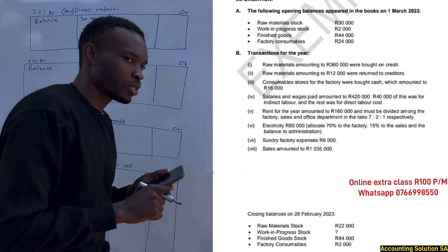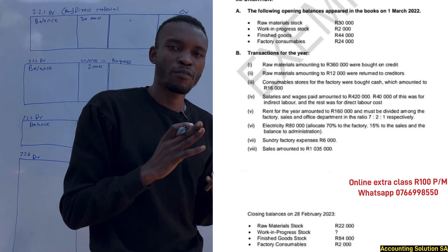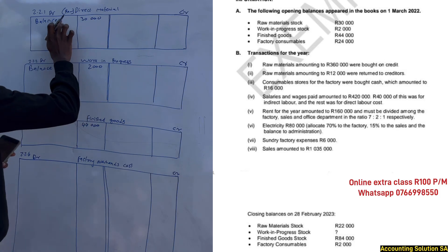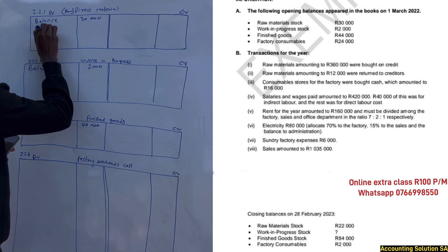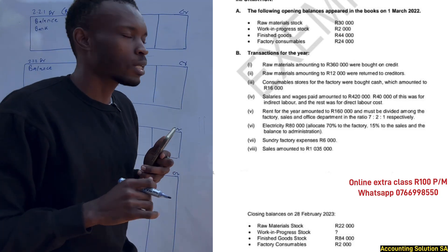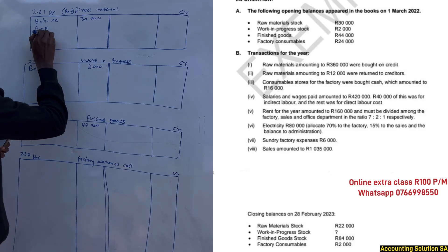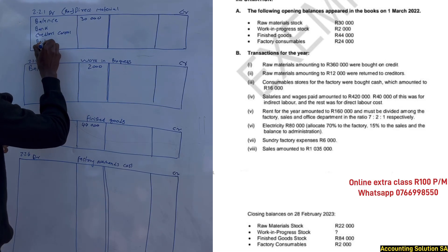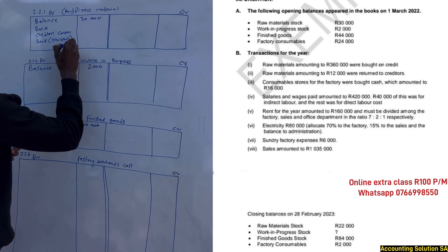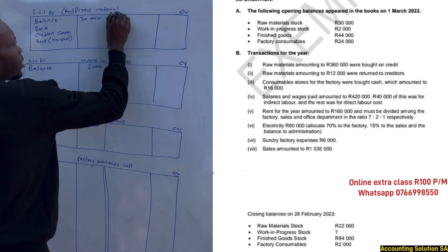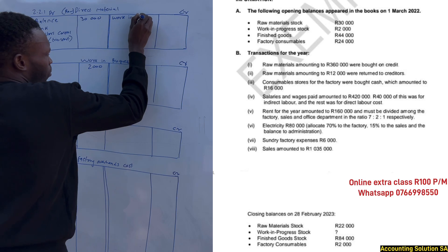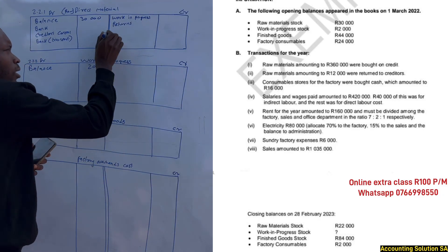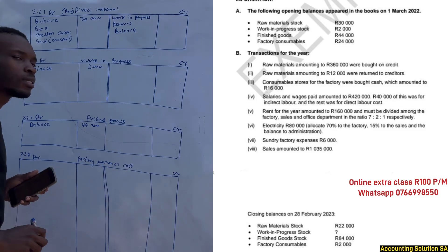Before we proceed, let's talk about the format of the direct material account. Number one: opening balance. Number two: bank — if we purchase raw material cash we record bank; if on credit, creditors control. Then transport — if we pay transport to deliver raw material we record it on the debit side. On the credit side we have work in progress and returns — if we return any direct material we record it there. Lastly, we have closing balance.